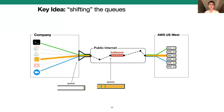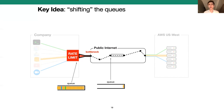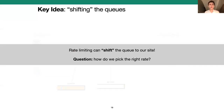If we need packets in our queue to schedule, but they only build up at a bottleneck, then one thing we could do is artificially create a bottleneck within our own site by putting our traffic through a rate limiter. As long as we choose a rate that's less than the real bottleneck, our rate limiter will become the bottleneck. As a result, our traffic's packets that would have queued at the real bottleneck will shift and queue at our rate limiter instead. Now that we have packets in our queue, we can implement scheduling.